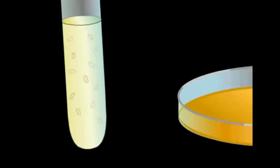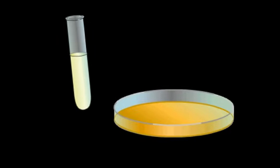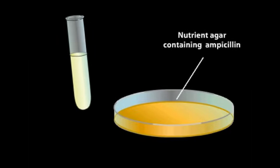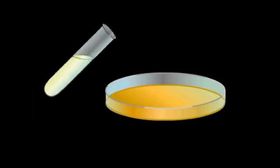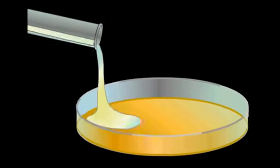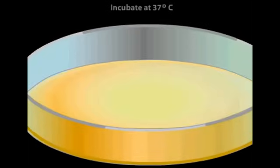The bacterial cells are poured onto a plate of nutrient agar containing the antibiotic ampicillin. With ampicillin in the agar, only cells resistant to the drug can grow. At 37 degrees, the cells will grow and multiply. Because they cannot move on the agar, each will produce a separate colony of cells.